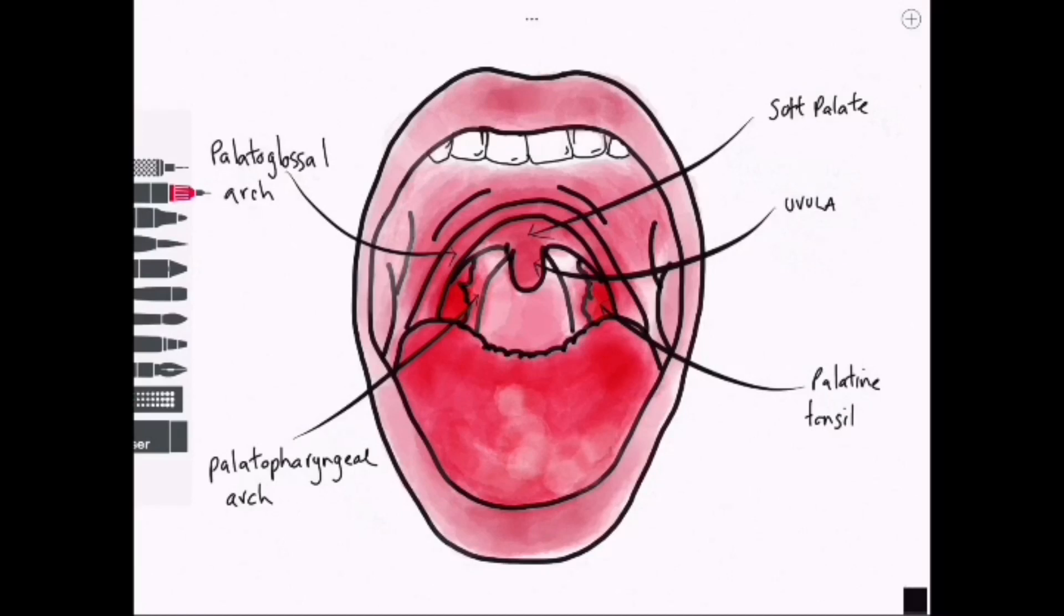Now at the back of the tongue there is a space that extends from there to the posterior wall of the pharynx and this is referred to as the oropharynx.